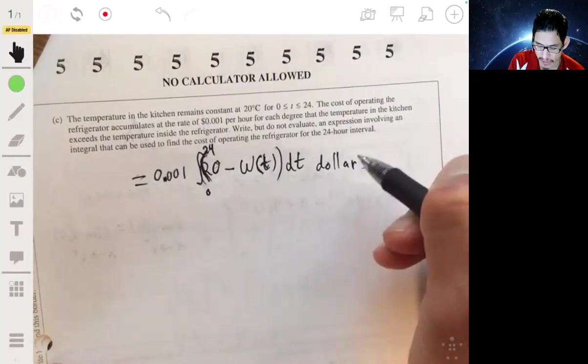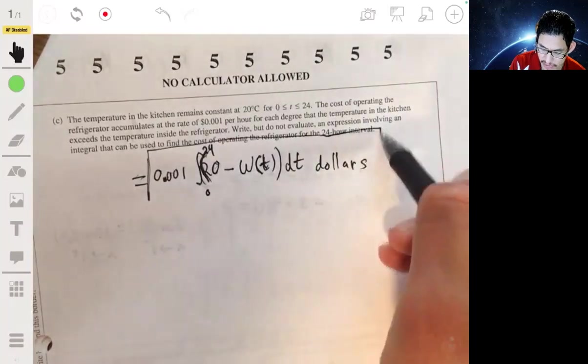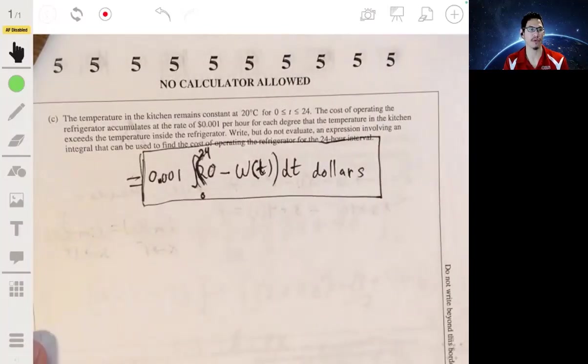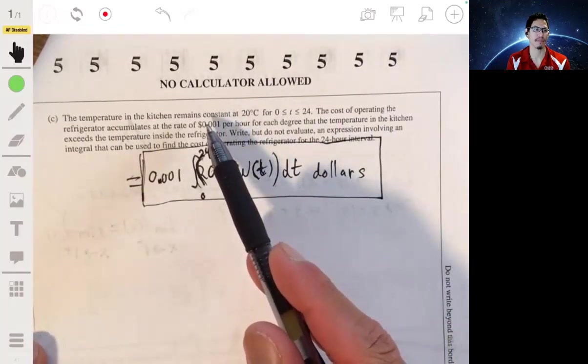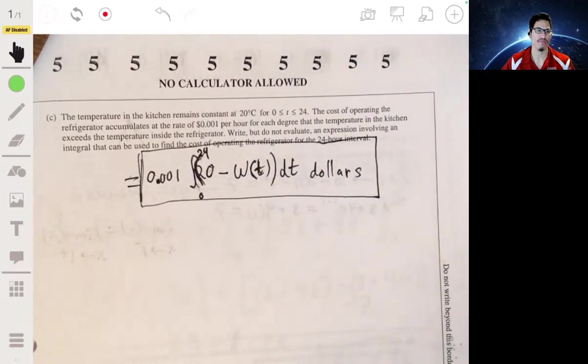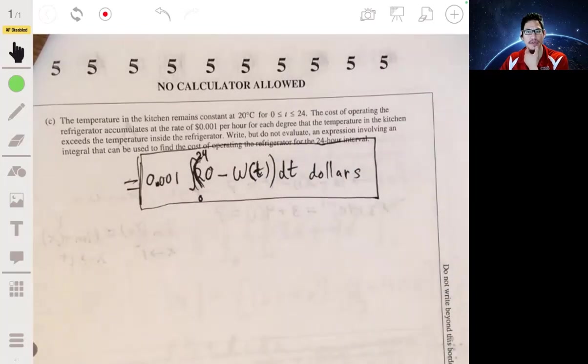And all this would be in dollars. Because, again, that's our unit of measurement. T is hours and we're given a dollar symbol. That's really pretty much it. There's only one way to write the answer, but this is probably the most simplest. It's just, again, remember, it's just a difference between those two temperatures.